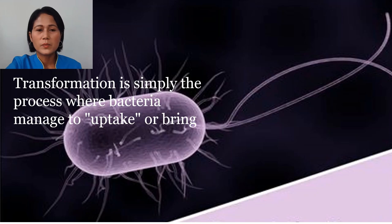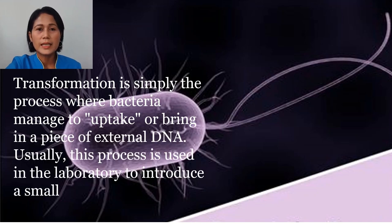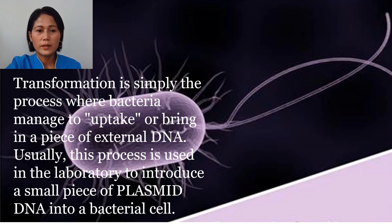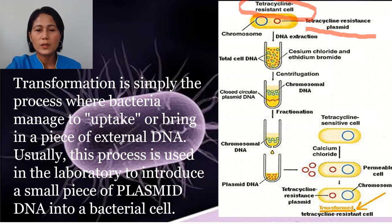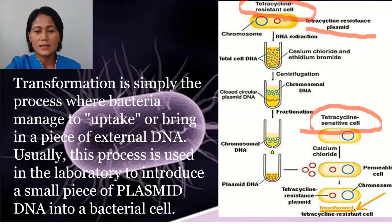Transformation is simply the process where bacteria take up a piece of external DNA. Usually, this process is used in the laboratory to introduce a small piece of plasmid DNA into bacterial cells. For example, a tetracycline-resistant plasmid from a tetracycline-resistant cell can, via laboratory processes such as DNA extraction, centrifugation, and fractionation, be introduced into a tetracycline-sensitive cell. This plasmid is then incorporated into the cell, transforming it into a tetracycline-resistant cell.